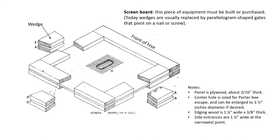Screen Board. This piece of equipment must be built or purchased. Today, wedges are usually replaced by parallelogram shaped gates that pivot on a nail or screw. The general layout of the screen board is a three-sixteenth inch thick plywood panel with one and one-quarter inch wide by three-eighths inch thick edging wood both on the top and bottom, leaving six openings.